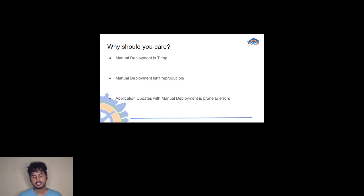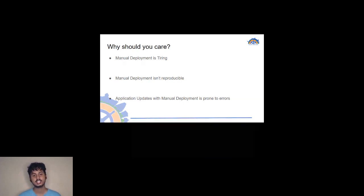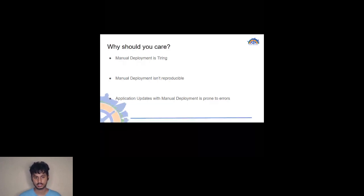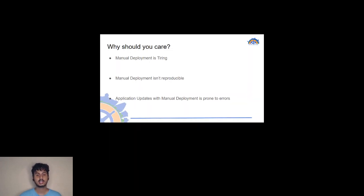Manual deployment is not reproducible. If you deploy something in a haphazard manner, it's very hard to reproduce. With Helm you get versioning, and you can deploy a lot more things with greater control. You can also change parameters inside your image, which can be helpful for your requirements, because application updates with manual deployment are prone to errors.